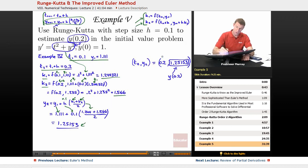That means my t2 is 0.2, my y2 is 1.25153. And so since I've gotten to the value of t that I was asked to find in the prompt, or rather that I was asked to find my estimate at, I'm just going to take the y value at that point and offer that as my estimate of y of 0.2. So my final estimate there is 1.25153.